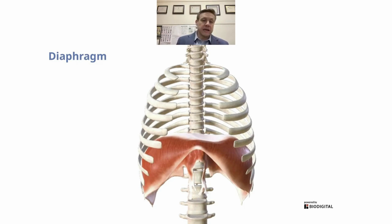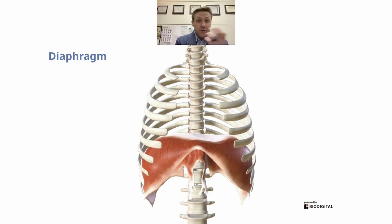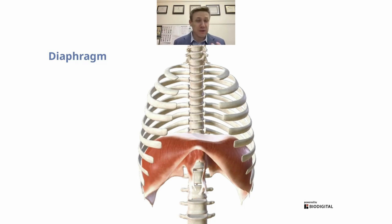We know the thoracic cavity or chest cavity is sealed off from the abdominal cavity by the diaphragm. A little embryology: we actually start early in development with one single body cavity, and it's the diaphragm that comes along and separates it into a separate thoracic and abdominal cavity — or in other words, a separate pleural and peritoneal cavity. We're going to talk about the pleural lining of the chest cavity, which is pretty much the same thing as the peritoneal lining of the abdominal cavity.